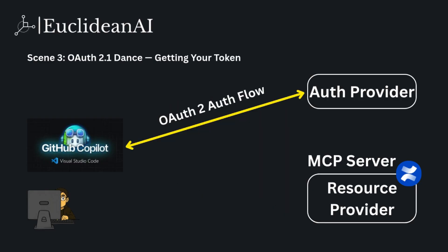In scene three, the MCP client gets the auth provider's URL and starts the OAuth 2.0 auth flow with the auth provider. The MCP client sends authentication requests to the auth provider, and after going through the full authentication flow, the auth provider sends the access token back to the MCP client.